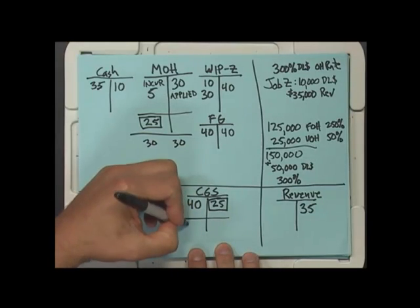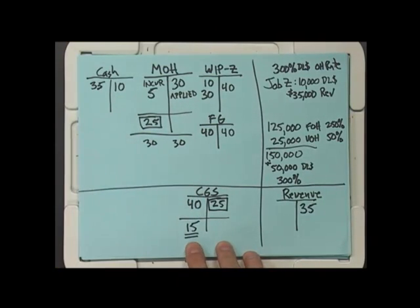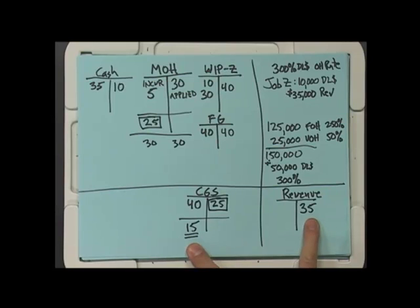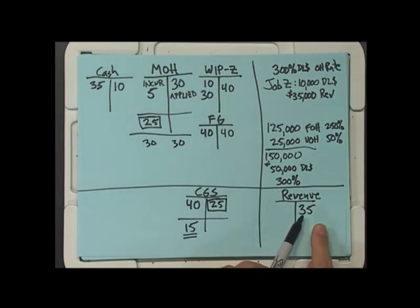And now you look, wow, we only have $15,000 of cost of goods sold, so even though the reported margin for this particular job is going to be $35,000 minus $40,000 or minus $5,000, the aggregate profit of the whole firm is going to go up by $35,000 minus $15,000, it's going to go up by $20,000.